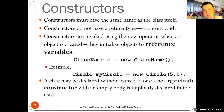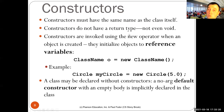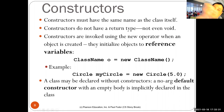Constructors are special methods to create objects of that type. Constructors must have the same name as the class itself. They do not have a return type in Java — not even void — because what they actually return is an object of that class. Constructors are invoked using the new operator, an object is created in the heap, and a reference is returned to the variable.